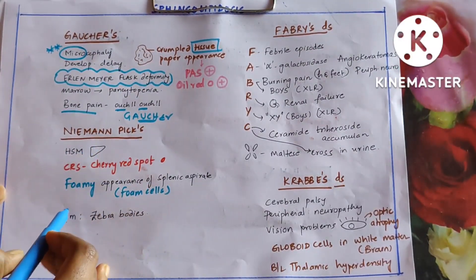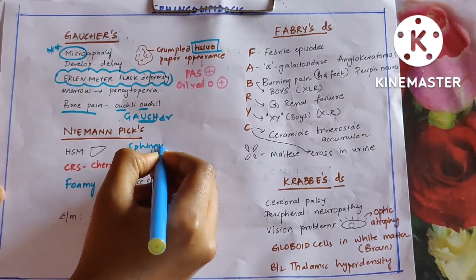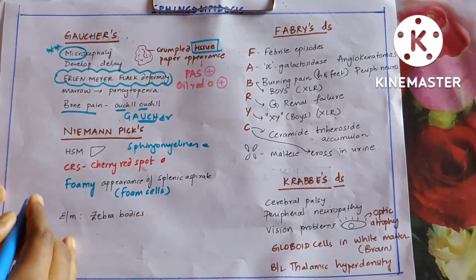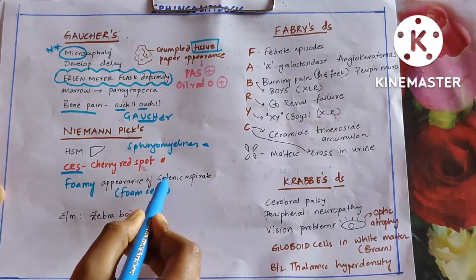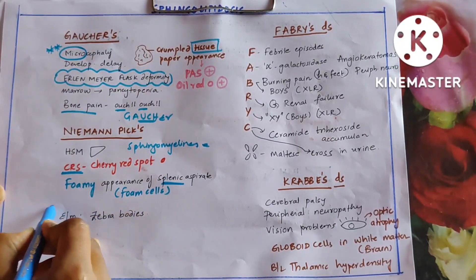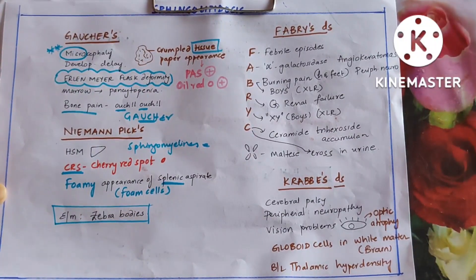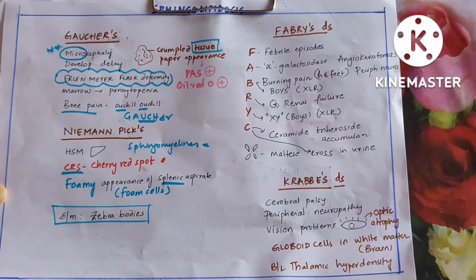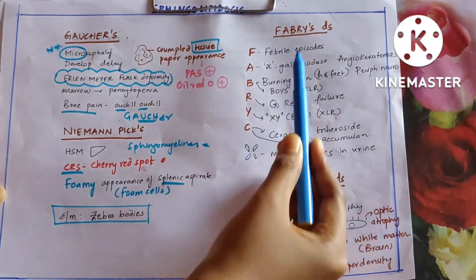Coming to Niemann-Pick: 'pick' means big, so everything is big here — HSM (hepatosplenomegaly) and cherry red spot is seen. Foamy appearance in splenic aspirate is seen. Electron microscopy shows zebra bodies in Niemann-Pick disease, which is due to sphingomyelinase deficiency.